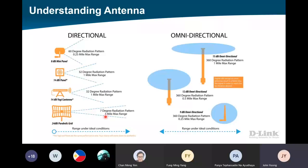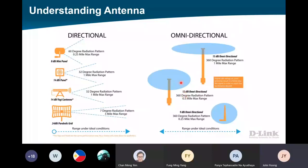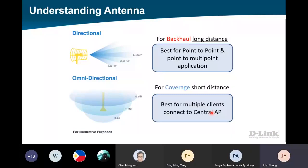For example, 24 DBI is only 7 degrees. So you need to really get line of sight and adjust the alignment. For the omnidirectional, it's 360 degrees. The higher the DBI, the smaller the coverage angle, but the distance will increase. For 12 DBI it's a bit different - shorter distance, taller coverage height. Normally for backhaul or point-to-point, we will not use omnidirectional because 360 degrees doesn't go far. We will use directional. For AP broadcasting to clients, we use the omnidirectional 360.